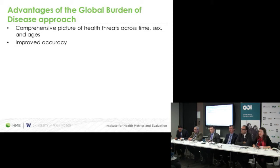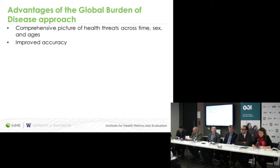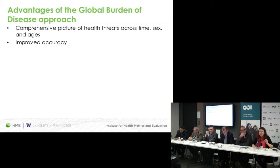Some advantages of the global burden of disease approach are that it provides a holistic view of health worldwide and it's more accurate and more rigorous than a study of a specific disease. Back in 1993 when Christopher Murray, our director, and Alan Lopez first started the global burden of disease study, funded by the World Bank as part of the World Development Report, they found that if you added up deaths from different disease-specific studies on things like malaria and tuberculosis, people were dying four times over. So the global burden of disease is more rigorous because it accounts for how many people are dying in a given year and what they're dying from, without the risk of double counting deaths.